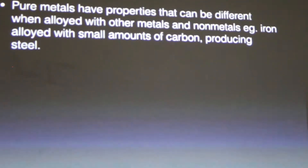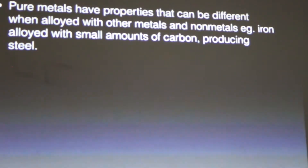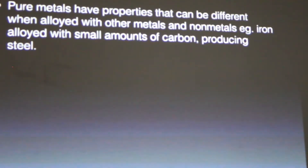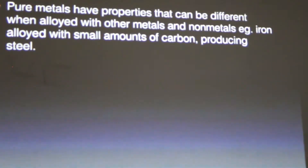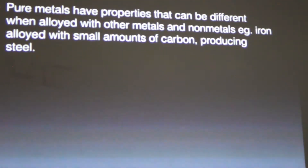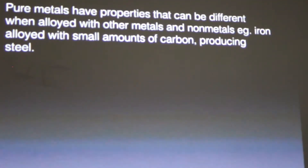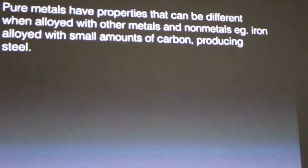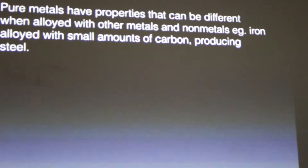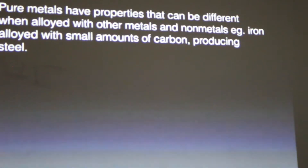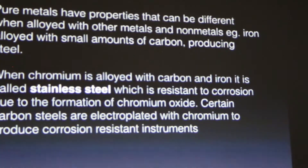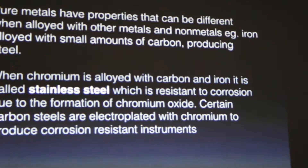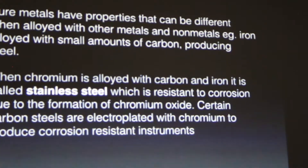When you add chromium to steel, it becomes stainless steel. An alloy of iron and carbon is steel, but iron has the property of rusting, so you don't want rusting to take place. So you generally add chromium to make it stainless steel. When chromium is alloyed with carbon and iron, it is called stainless steel, which is resistant to corrosion.